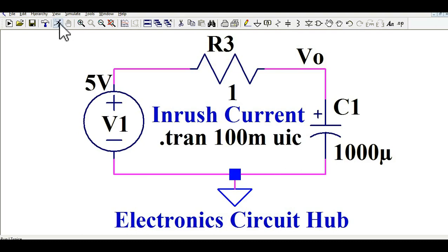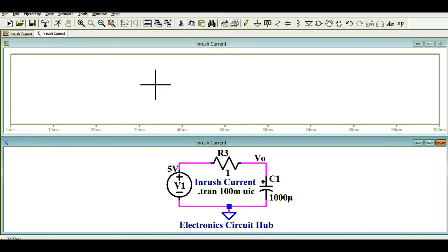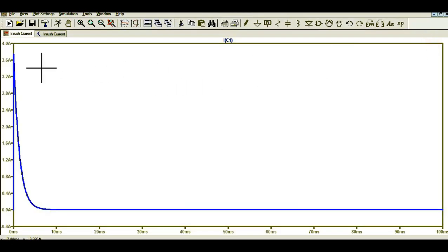Go to this run button, click on it, and then click on C1. You will see the inrush current. You can see here for a short duration of time, around 4.8 or 5 ms, your inrush current is too high. It is coming around 3.7 ampere.